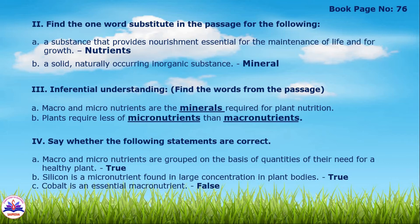Roman numeral 4: say whether the following statements are true or false. First: macro and micronutrients are grouped on the basis of quantities of their need for a healthy plant – answer is True. Second: silicon is a micronutrient found in large concentration in plant bodies – answer is True. Third: cobalt is an essential macronutrient – answer is False, because cobalt is an essential micronutrient.